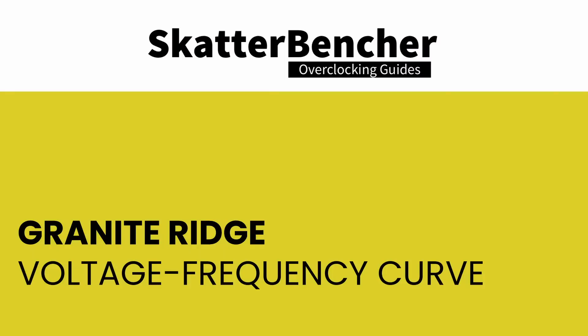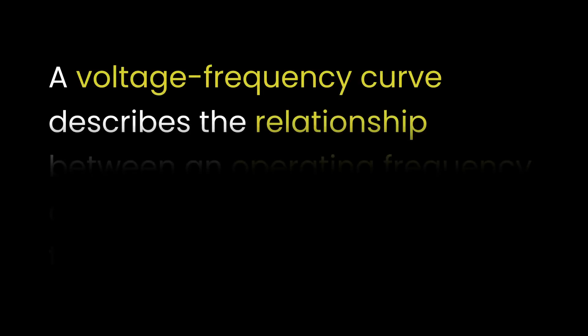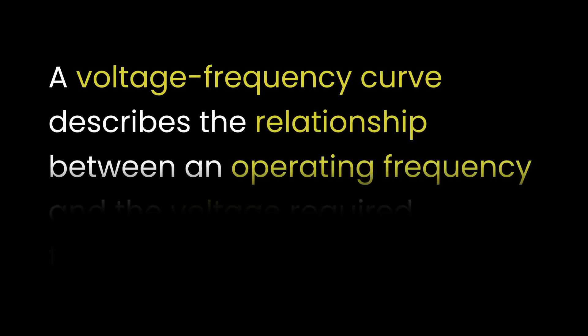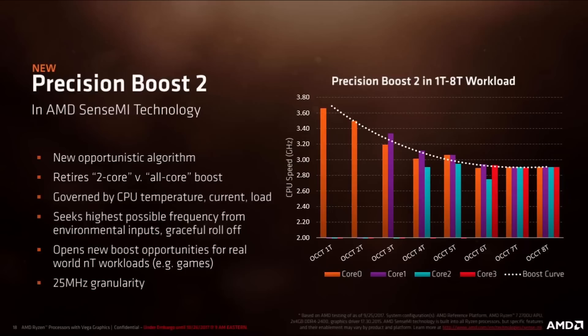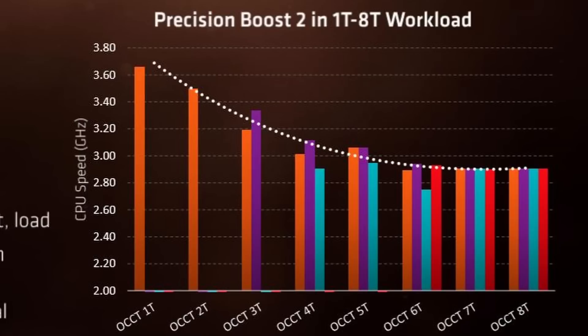Let's start with the basics: the voltage-frequency curve. Simply put, a voltage-frequency curve describes the relationship between an operating frequency and the voltage required to operate at that frequency. Every modern SoC has a factory-fused voltage-frequency curve and uses this to dynamically adjust the power consumption depending on the workload needs.